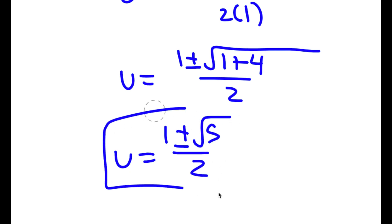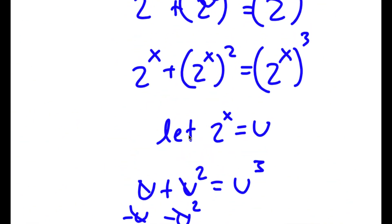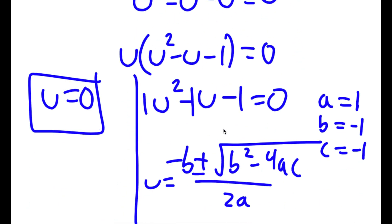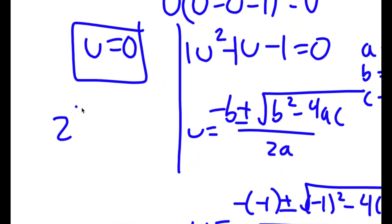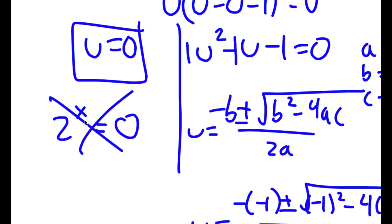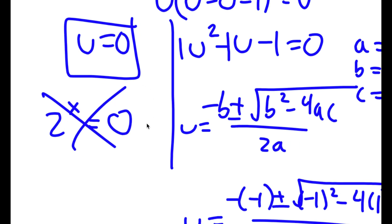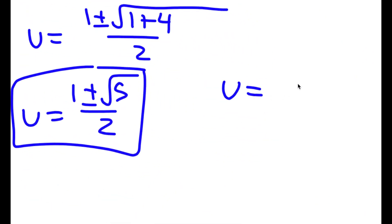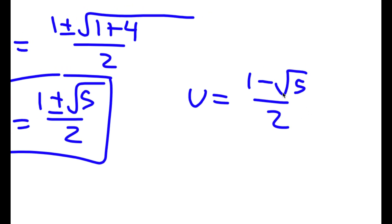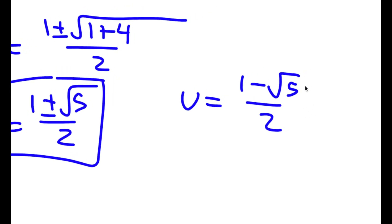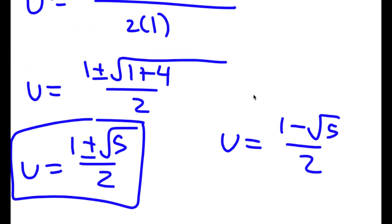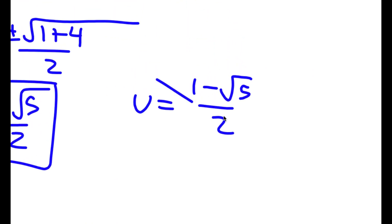So these are two more solutions. Now remember how we let 2 to the power of x equal to u. Starting with u equaling 0: 2 to the power of x equals 0, which has no solution because you can't take the power of a number and make it equal 0. For u equal to 1 minus the square root of 5 over 2, that's a negative number, and you can't take the power of a positive number and make it negative, so this is invalid as well.